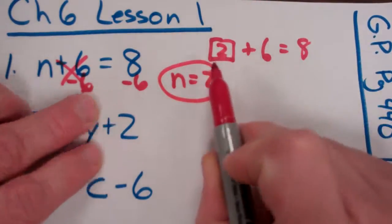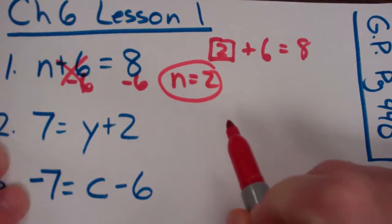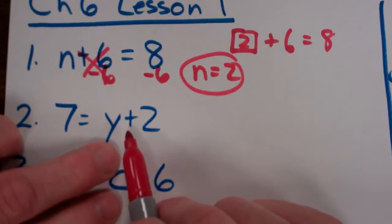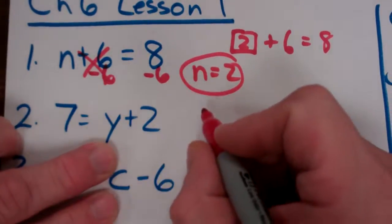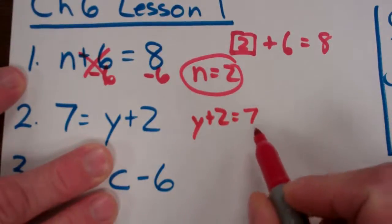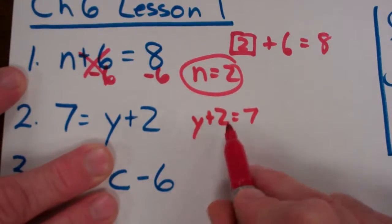And so once again, back to grade school, that's what was in that box, that 2. So it doesn't matter which side the variable is on. So if this time the variable is over here, it doesn't matter. In fact, you could actually write this as y plus 2 equals 7. That doesn't make a difference which side it's on, as long as it's equal.